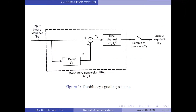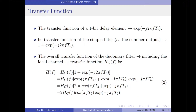The transfer function of the 1-bit delay element is given by e^(−j2πfTb). The transfer function of the no-delay element, which is a straight line, is 1. Therefore, the transfer function of the simple filter — consisting of the no-delay line and the 1-bit delay line — is 1 + e^(−j2πfTb). The overall transfer function of the duobinary conversion filter, including the ideal channel with transfer function Hc(f), is Hc(f) · (1 + e^(−j2πfTb)). This is in the form 1 + e^(−2θ).